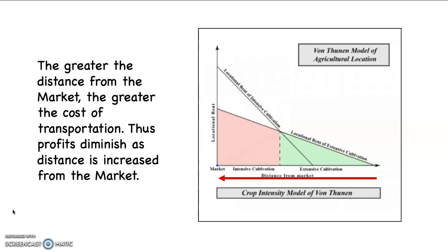Keep this in mind also. The greater the distance from the market, the greater the cost of transportation. This is why that rust-colored arrow is going from right to left with the arrow pointing towards the market. So that as you're increasing distance, you're going to have to transport your goods a greater distance. That will diminish the profit.